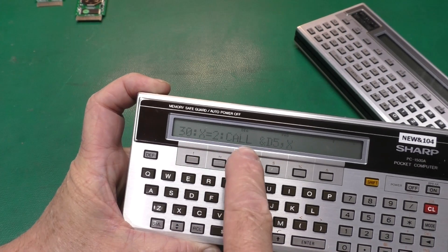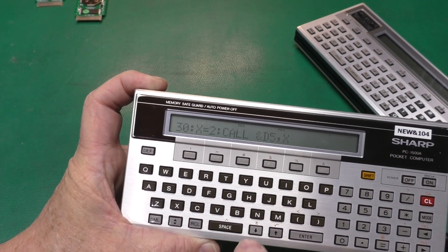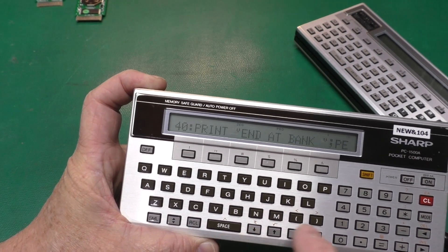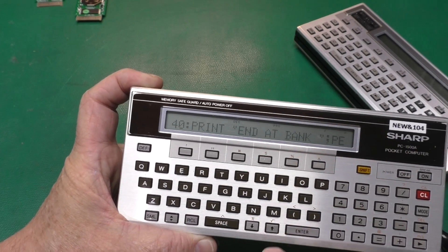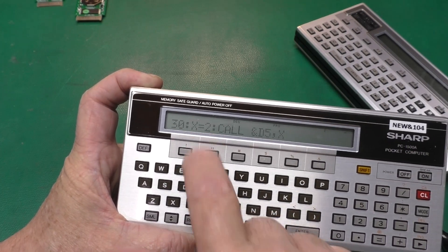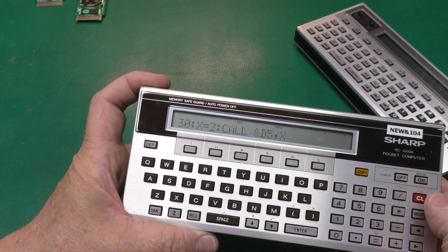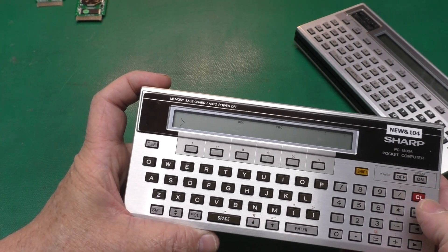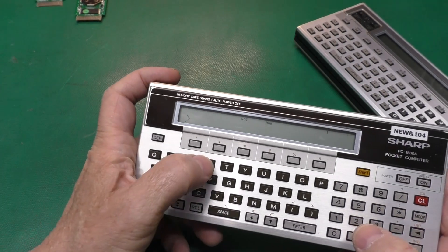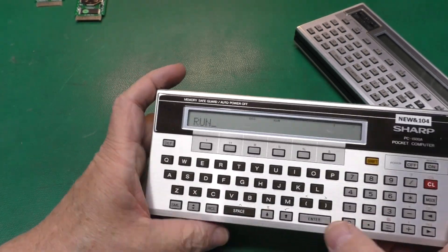Then it's going to set x equal to 2. Call d5, comma, x. It's going to go to bank two. And in bank two, bank two is laid out exactly like this, except this says x equals 1. Okay? I'm going to switch to run mode here. Remember, we're in bank one now. I'm going to go run.